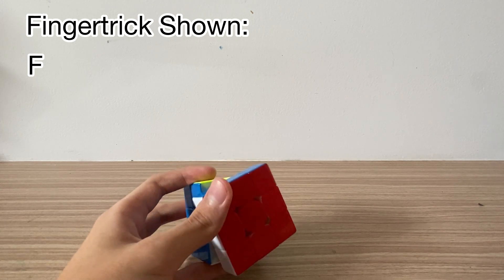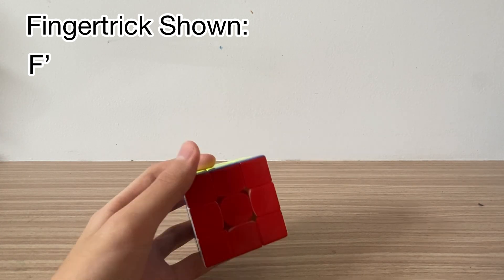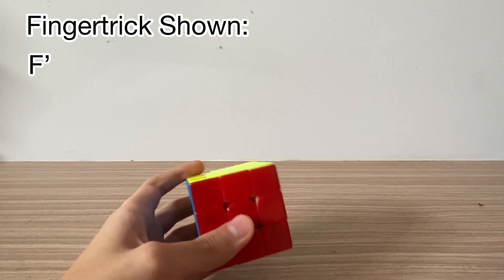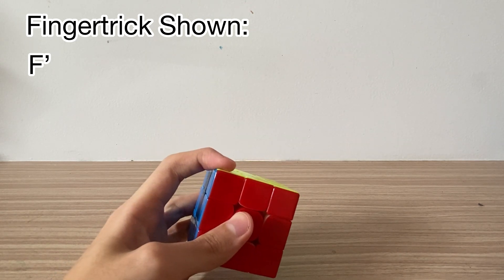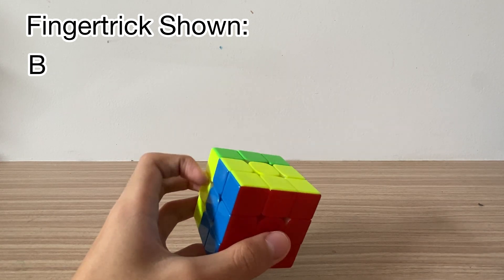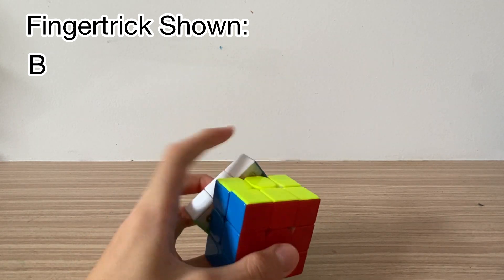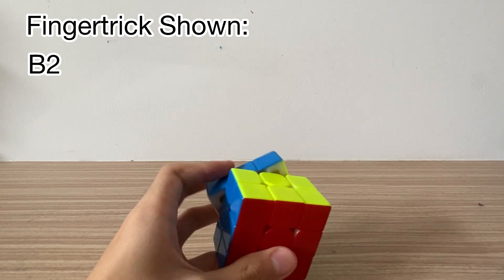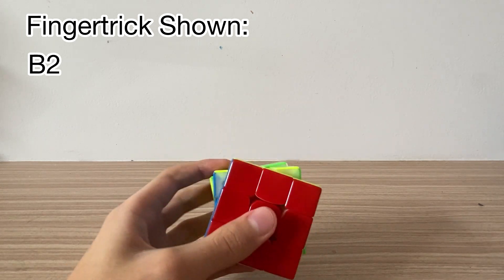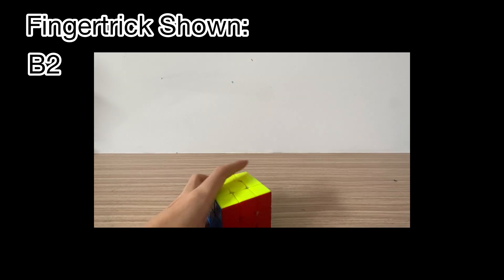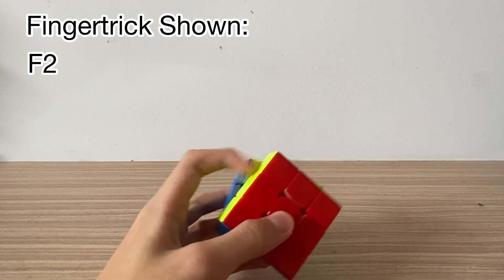For F, you do your thumb like this. And for F prime many people start out, they will usually do this. But if you're getting more advanced, you have to do this. For B moves, you can do this. And for B prime just push like that. For B2, you do like this. I'm not able to do it. For F2, it's just F prime F prime.